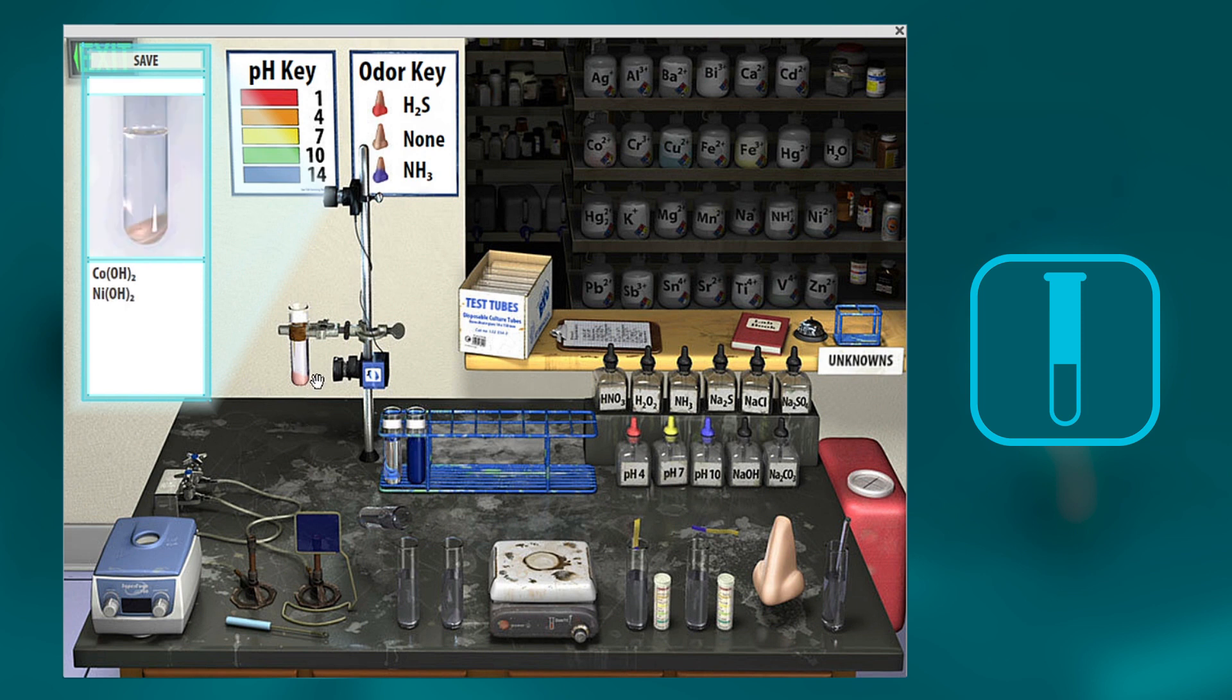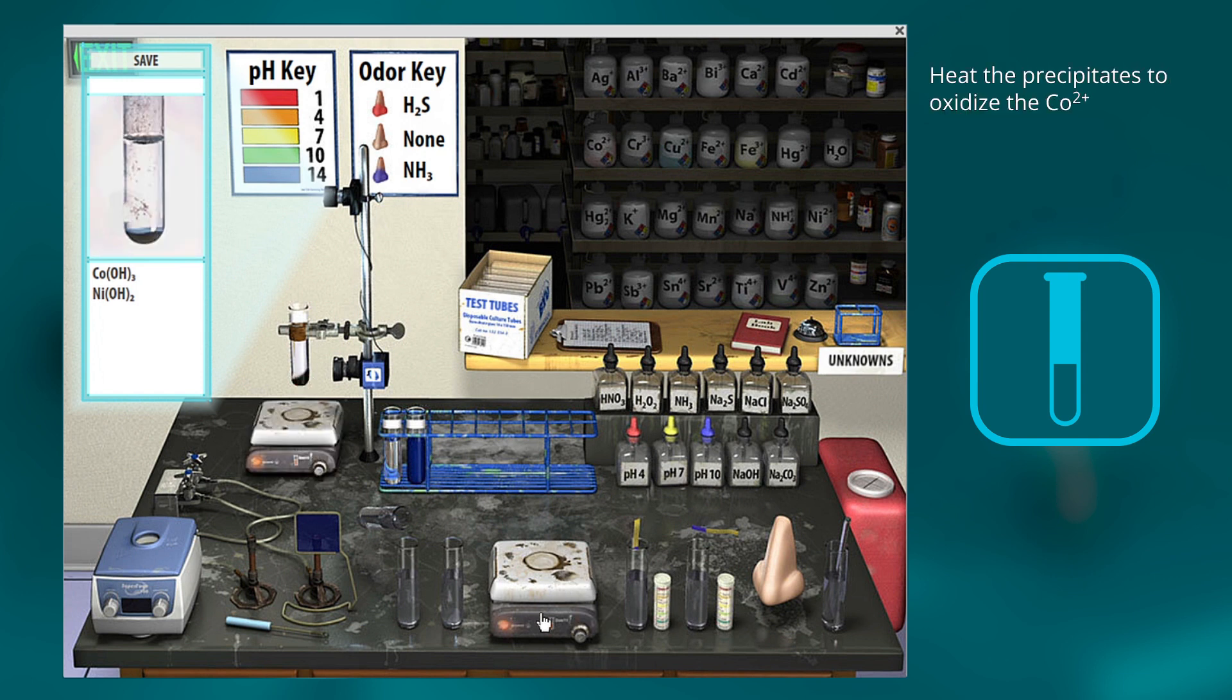Now how do you separate the cobalt and the nickel? Do you remember the test to do this? We're going to add heat. And now we've oxidized the cobalt. So now what do you do? You can add nitrate ions, and you can see your cobalt is precipitated, and your nickel is a cation in solution.